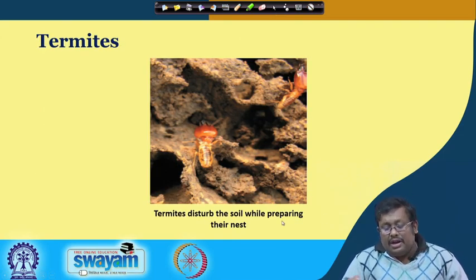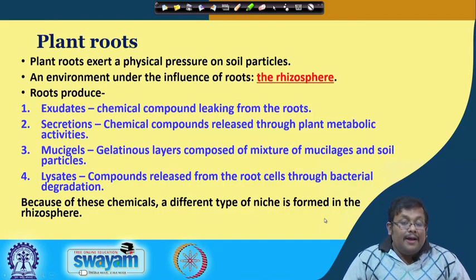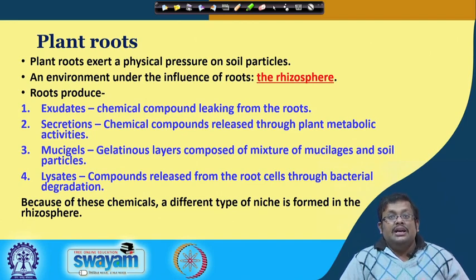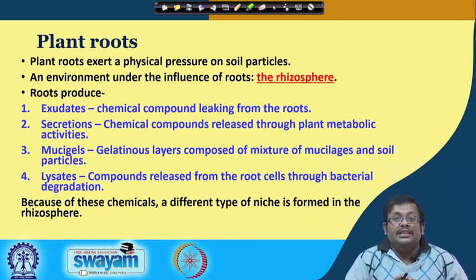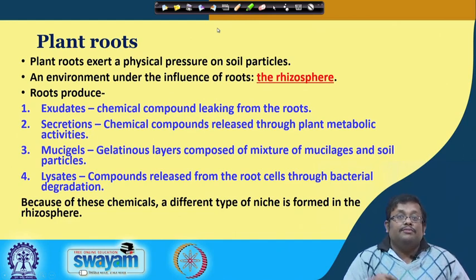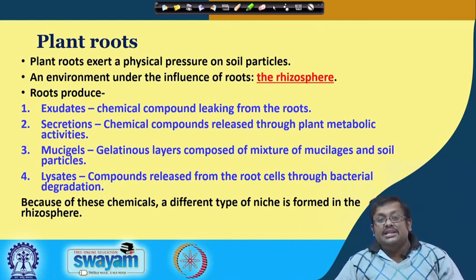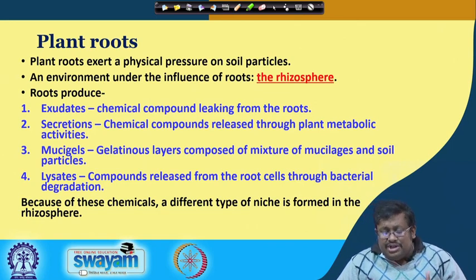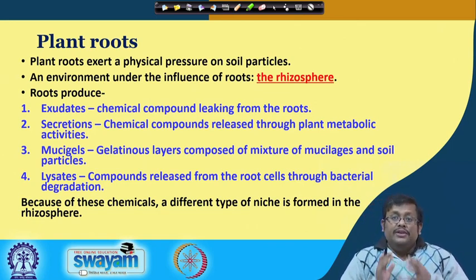Termites also disturb the soil while preparing their nests and are important for water and air movement within the soil. Plant roots, as macroflora, exert a physical pressure on soil particles influencing their aggregation. The rhizosphere - the environment under the influence of roots - is a very important habitat for microorganisms. Roots produce different chemicals like exudates, secretions, mucigels, and lysates which help in nutrient transformation and accelerate different biochemical processes, making the rhizosphere a very chemically and biologically active zone.